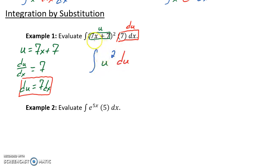So again, u is representing that 7x plus 7, and du comes about as a result of taking the derivative of both sides of that substitution statement. So now we're integrating with respect to u, and all we're integrating is u squared, so this would become u cubed over 3 plus some constant c.